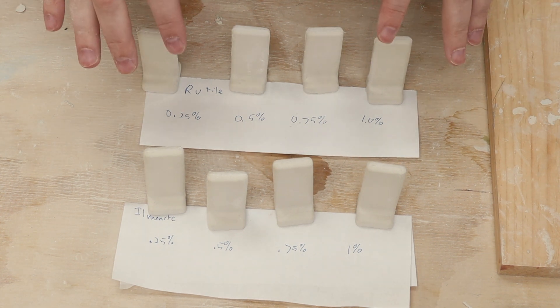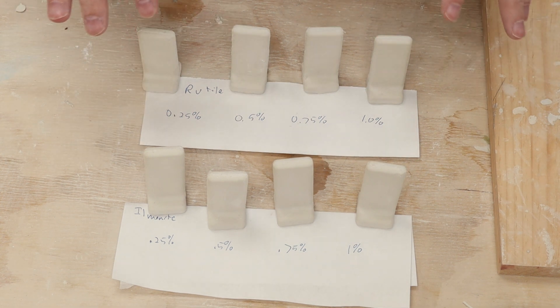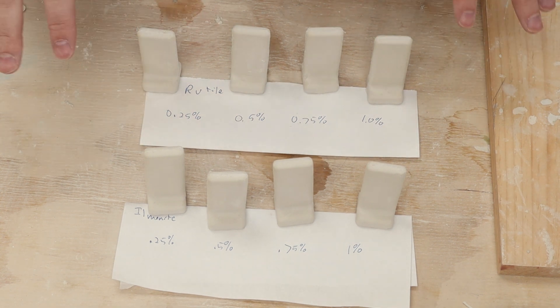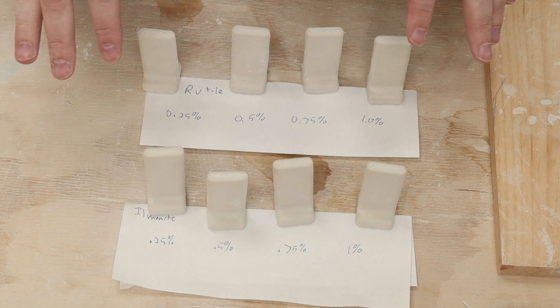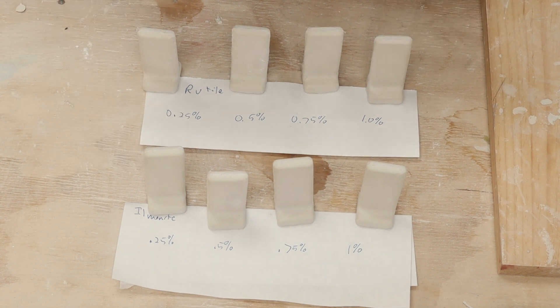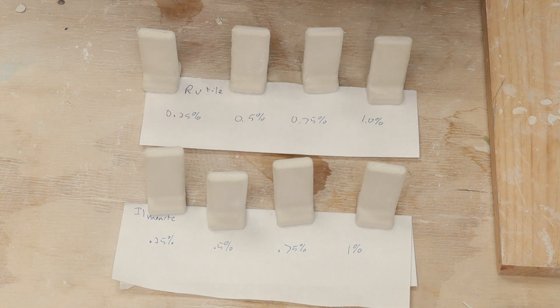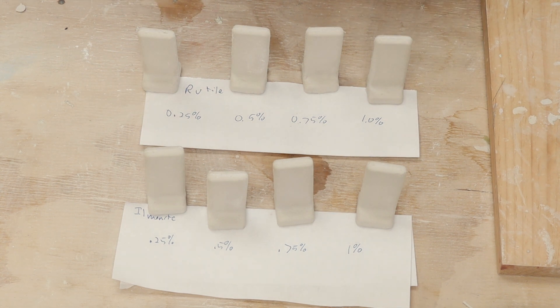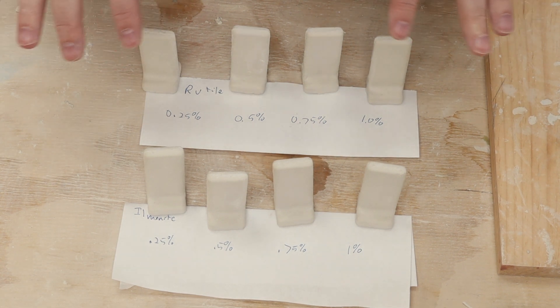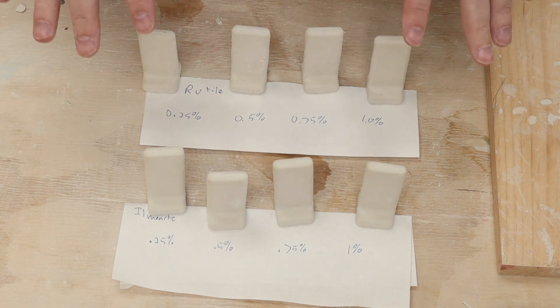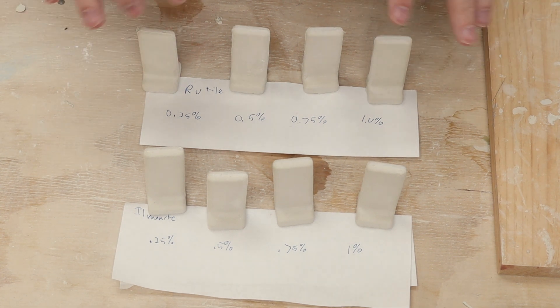But I also know that things look very different in their unfired state. So what I'm going to do is actually go ahead and do a final firing on these all the way up to cone 6. I'm not going to glaze these, I'm just going to test the raw clay bodies. Once I get a percentage of speckles that I kind of like, then I can start testing how they will interact with the glazes. So that will take me a little while to actually do the firing. But through movie magic, you guys will see that in just a second.